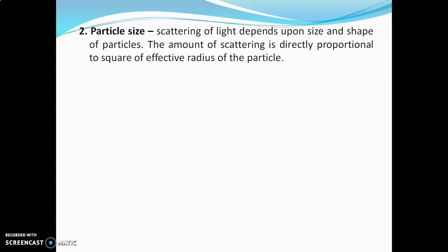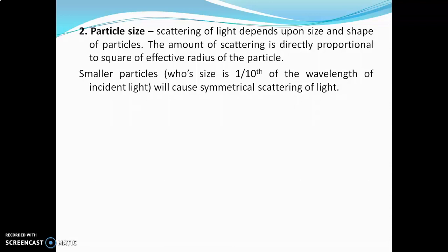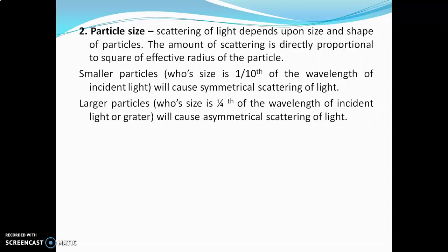The next factor is particle size. Scattering of light depends upon the size and shape of particles. The amount of scattering is directly proportional to the square of the effective radius of the particle. Larger particles will scatter light more and smaller particles will scatter less. Smaller particles whose size is one-tenth of the wavelength of incident light will cause symmetrical scattering, while larger particles whose size is one-fourth or greater than one-fourth of the wavelength will cause asymmetrical scattering. Symmetrical scattering means scattering in all directions is almost equal, while asymmetrical scattering means more scattering in a particular direction.